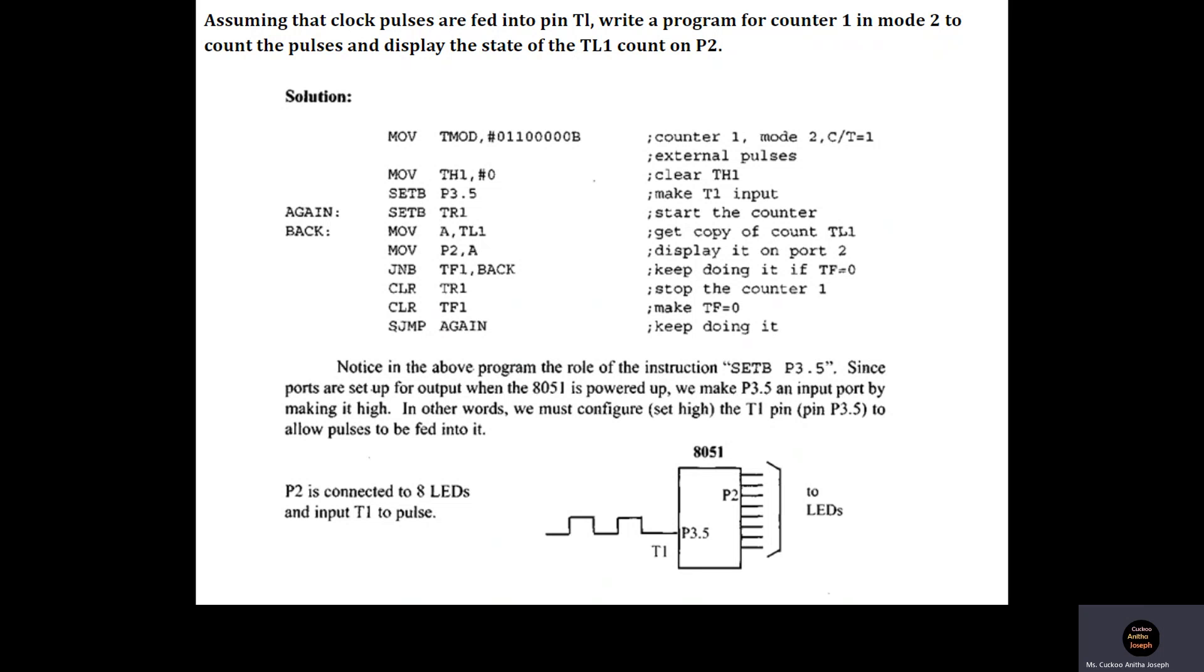For that, first it should be copied to the accumulator, and from the accumulator it has to be sent to port 2. The instructions for that are MOV A, TL1, which copies the content of TL1 into the accumulator, and MOV P2, A, which copies the content of the accumulator to port 2. And it is shown in the figure that a set of LEDs are connected at port 2 so that the count becomes visible to the user.